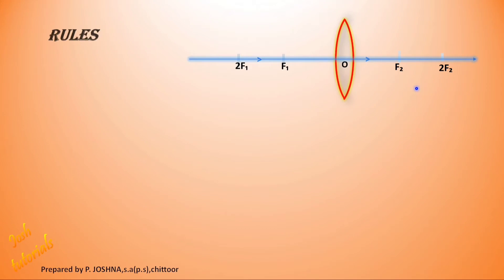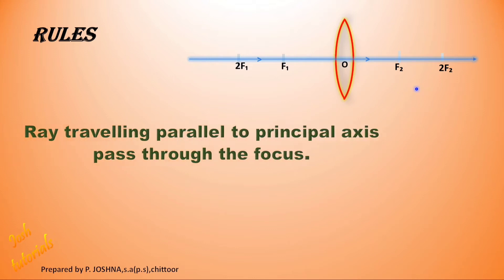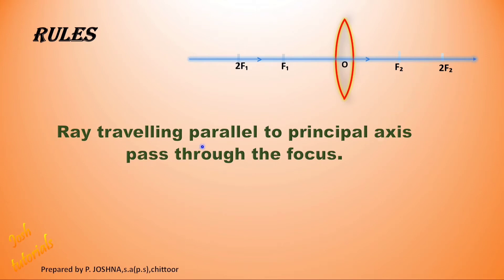There are just two simple rules — if you know them, you can draw all ray diagrams. The first rule says: a ray traveling parallel to the principal axis passes through the focus. The green ray is parallel to the principal axis, and after meeting the lens it passes through the focus.